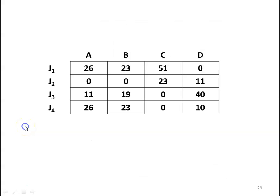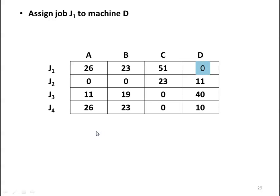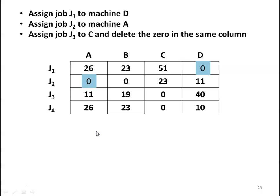Now make the assignment. Assign J1 to D, J2 to A, J3 to C; the remaining zero in that row is deleted. The assignment is incomplete because J4 is not assigned and machine B is free.